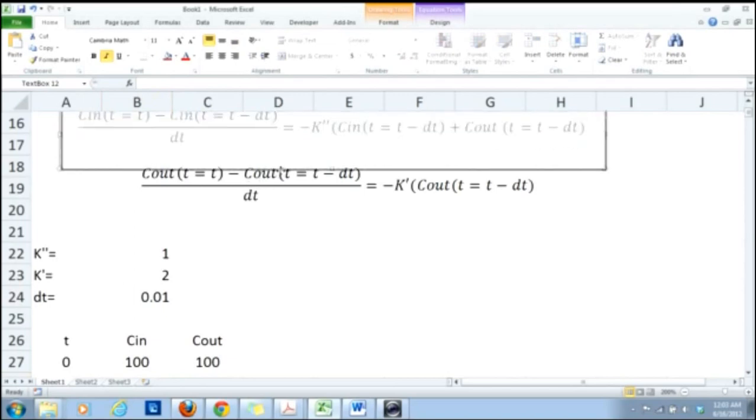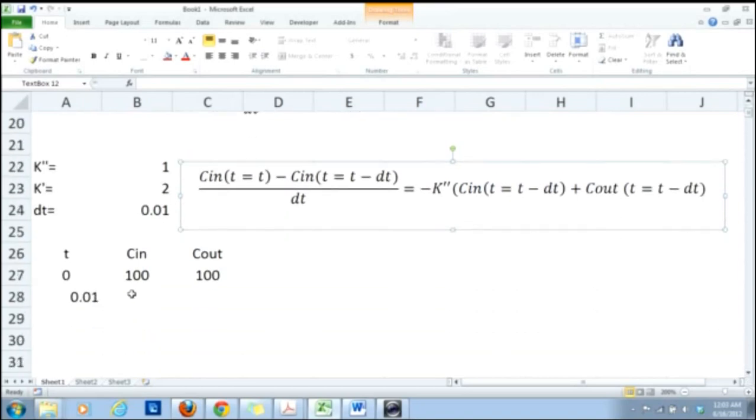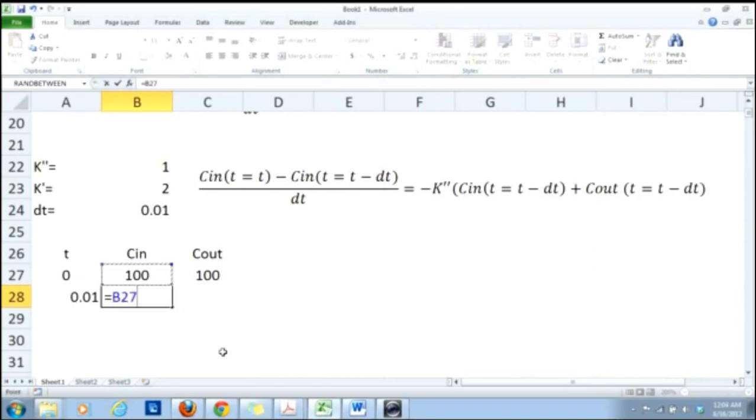Now C_in, so for C_in I will use the formula which is defined here. Let me grab the differential equation here. So I'll say C_in is equal to C_in at t equals t minus dt minus dt. So this is dt and I put dollar sign again and then into k''. So k'' again I put a dollar sign here and then into C_in minus C_out. And now here I'm not putting a dollar sign on C_in and C_out because the C_in and C_out are not constant, they will change with the time.